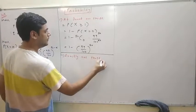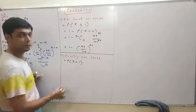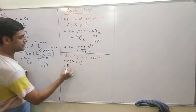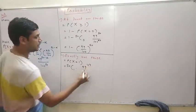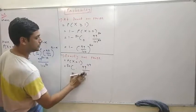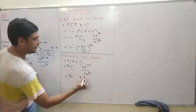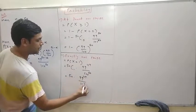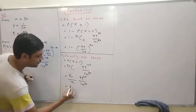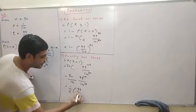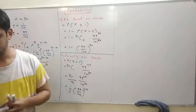Second question: exactly one prize means we find P(x = 1). That is 50C1 times (99/100) raised to 49 upon 100 raised to 50. So 50C1 is 50. We get 99 raised to 49 upon 100 raised to 49 into 100. So 50 by 100 is 1 by 2, and that is (1/2) times (99/100) raised to 49.